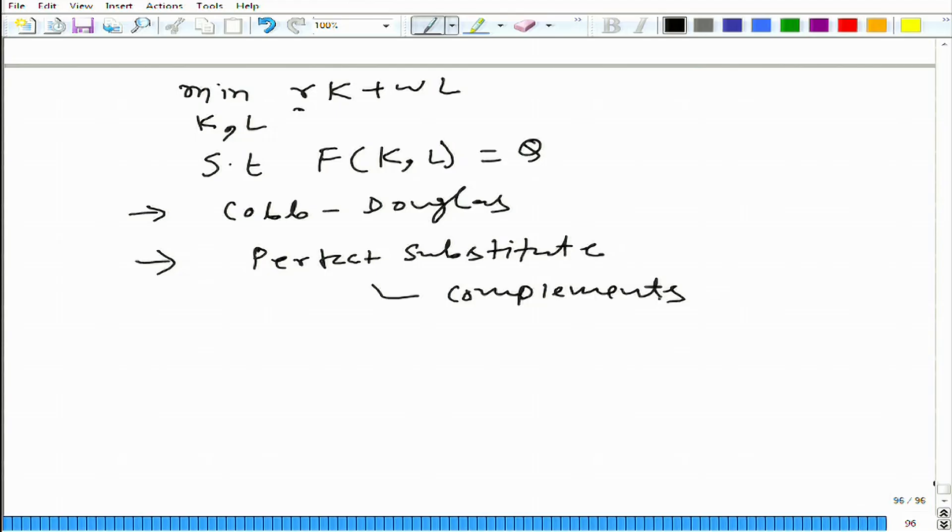We solved these three specific problems—perfect substitute and perfect complement—in detail, but Cobb-Douglas I just gave you the hint. The point is, when we solve, we get capital employed in the production process as a function of rent, wage, and amount of output.